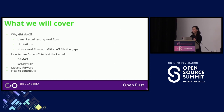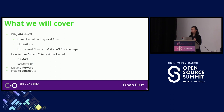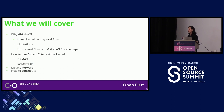During this presentation, here is what we will cover. First, we are going to understand why GitLab CI in the first place. To answer that, we'll see what the usual kernel testing workflow is, its limitations, and how a workflow with GitLab CI fills the gaps. We'll also see how to use GitLab CI with one of two implementations: DRM CI and KCI GitLab. Then a few thoughts about moving forward and how to contribute. My goal is to convince you that a workflow with GitLab CI has great value and that it's very easy to use one of those implementations — so maybe you'll give it a try.